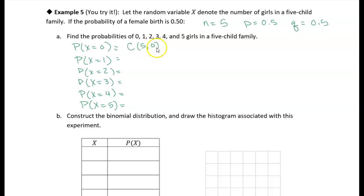We got n and x, and then we're going to take p to the x. So in this case, it's 0.5 to the x, which is zero, and 0.5 to the fifth power.